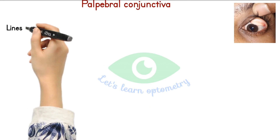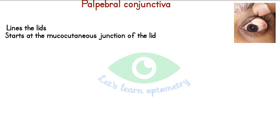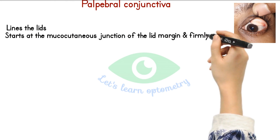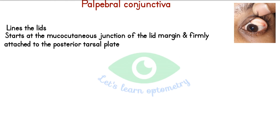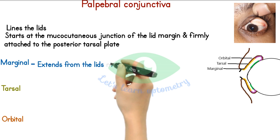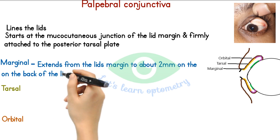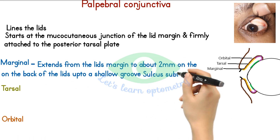Palpebral conjunctiva lines the upper and lower lids. It starts at the mucocutaneous junction of the lid margin and is firmly attached to the posterior tarsal plate present in the lids. It can be further divided into marginal, tarsal, and orbital conjunctiva. The marginal portion extends from the lid margin to about 2 mm on the back of the lid, up to a shallow groove called the sulcus subtarsalis.